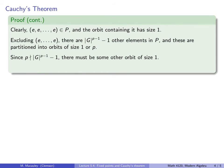Now, since p does not divide this number, these are the remaining elements in the set, then there must be some other orbit of size 1. Because there's no way that these elements can be partitioned into a whole bunch of orbits of size p, because p doesn't divide the number of these elements.